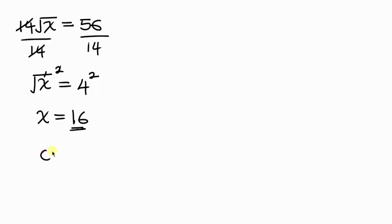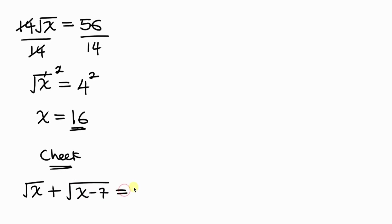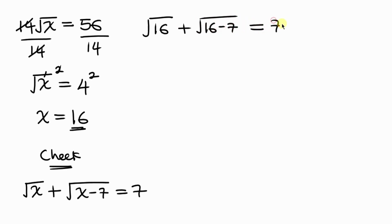Now let's check whether x equal to 16 is the solution. The given equation is the square root of x plus the square root of x minus 7 equal to 7. Plugging in 16 in place of x, we get the square root of 16 plus the square root of 16 minus 7, and we expect 7 as a result.